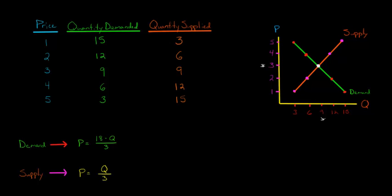And so the equation that represents the demand curve in this case would be price is equal to 18 minus the quantity demanded divided by 3. So this equation right here represents this line. And then our supply curve is represented by the line price is equal to the quantity supplied divided by 3.